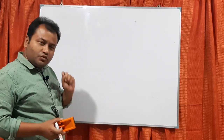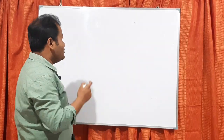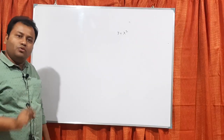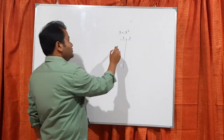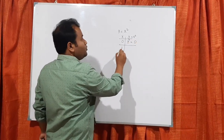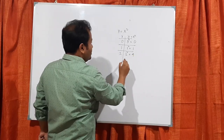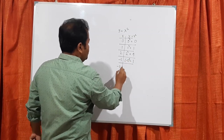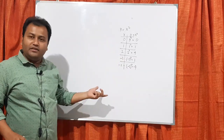Suppose you remember from sixth or seventh standard — if we have to draw a curve, what do we do? Suppose the equation y = x² is given and we have to draw the curve. We formulate some x and y points: x=0 gives y=0, x=1 gives y=1, x=2 gives y=4, x=-1 gives y=1, x=-2 gives y=4. So we find 5 to 6 points and then start drawing the graph.